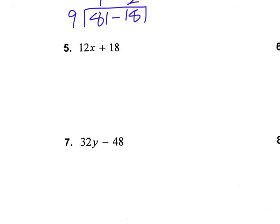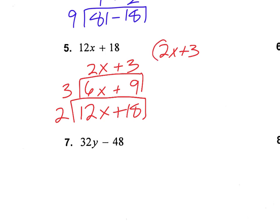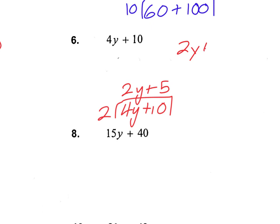Number 5 — we're finally to one with a variable, but we treat it just the same. What numbers go into 12 and 18? Maybe you don't know the GCF off the top of your head, so start with 2. It goes into 12x six x times, and into 18 nine times. There's a 3 that goes into those too — giving 2x and 3. So we get 6 times the quantity 2x plus 3. For number 6, we have 2y plus 5 in parentheses with a 2 on the outside.